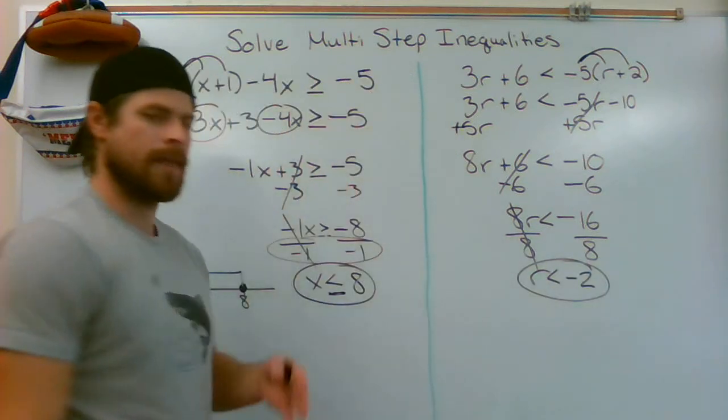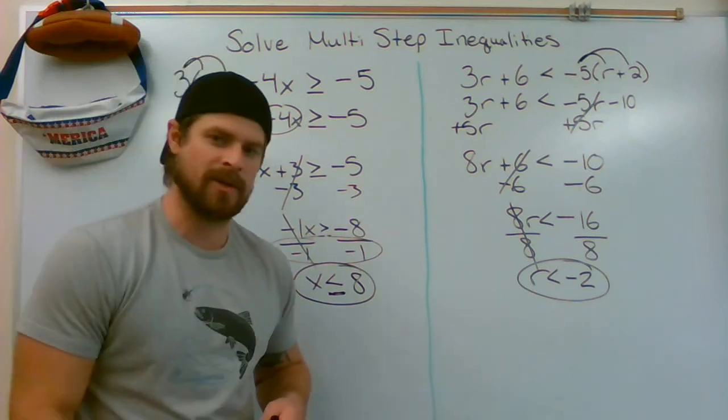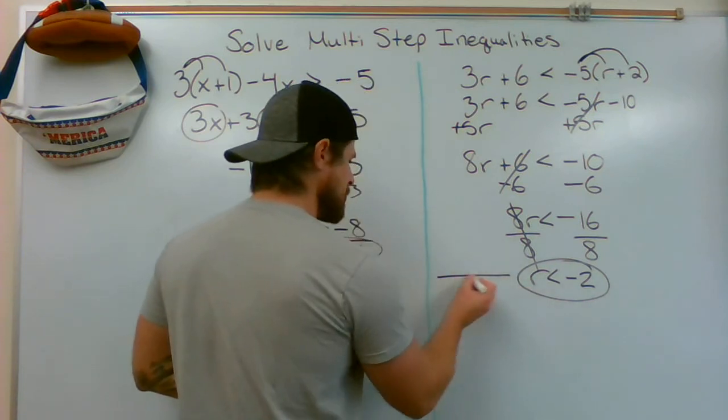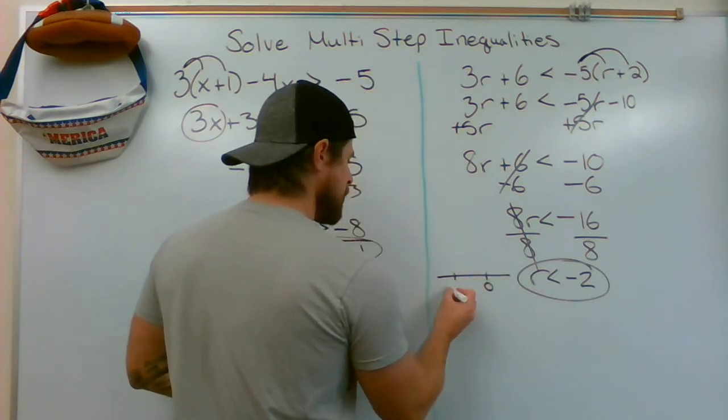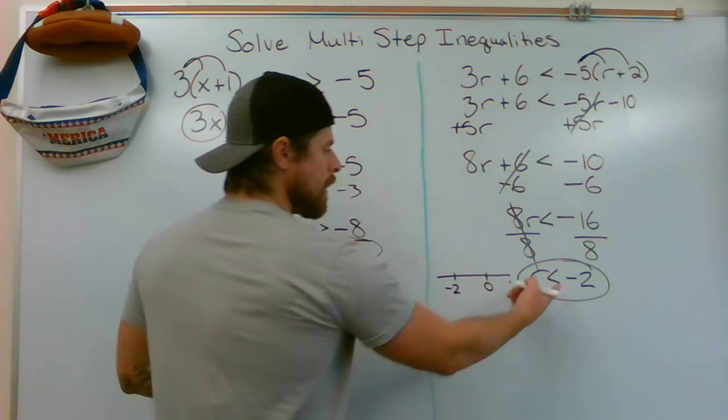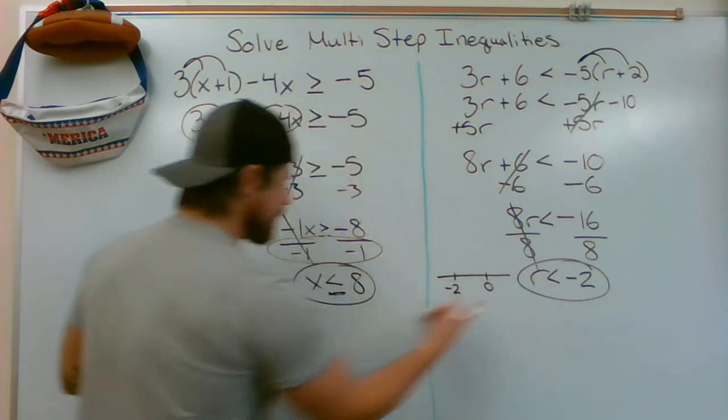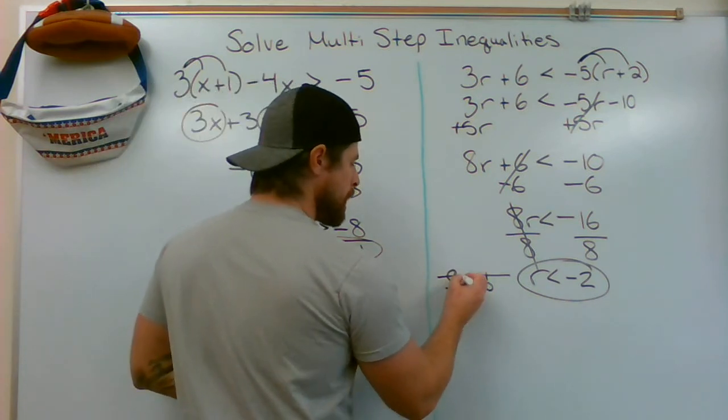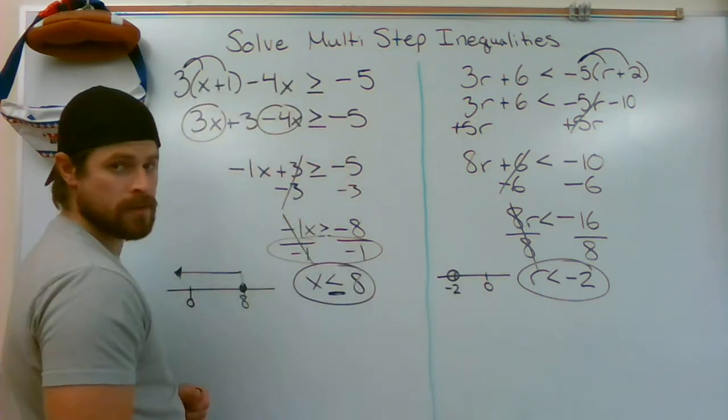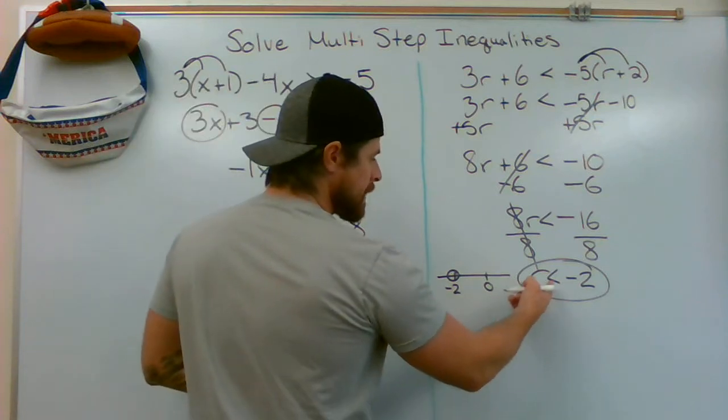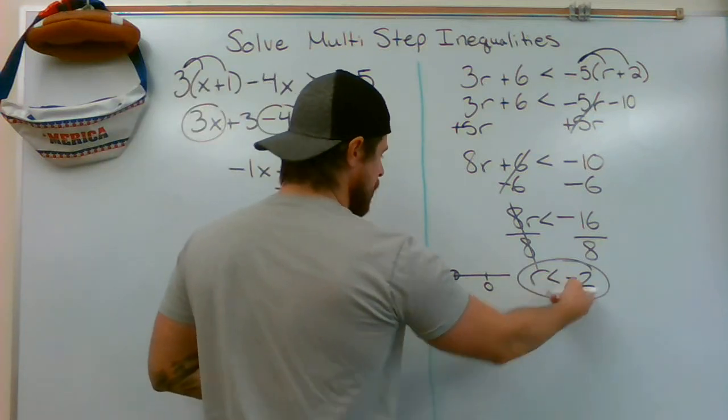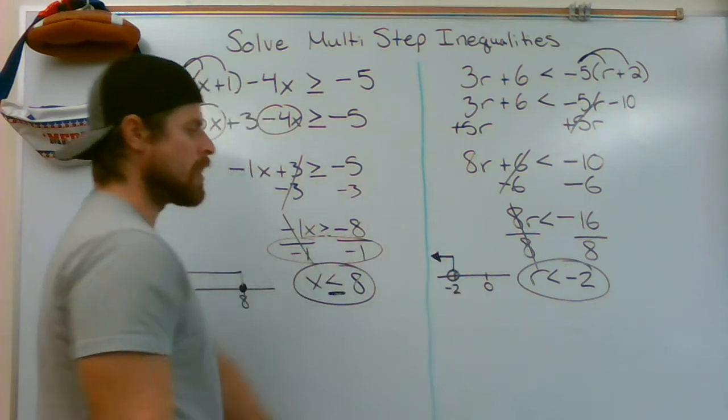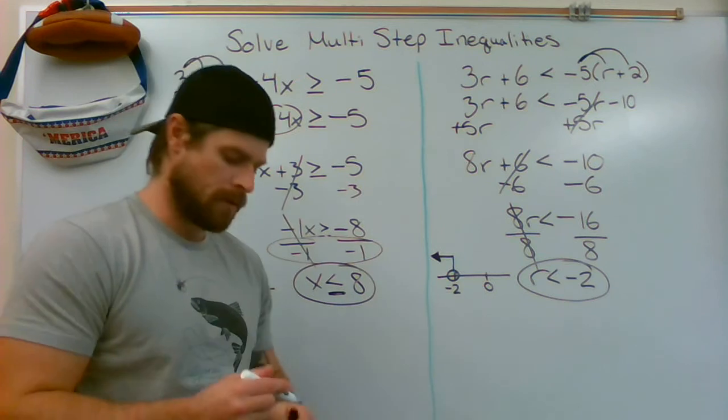Circle your result. That is your answer given as an inequality. And here it is as a graph. Zero, negative 2. Because I don't have the line underneath here like I did here, we're not saying or equal to. So we do an open circle at negative 2. And r is less than negative 2. Less than would be to the left. All numbers that are less than that value would be to the left on a number line.